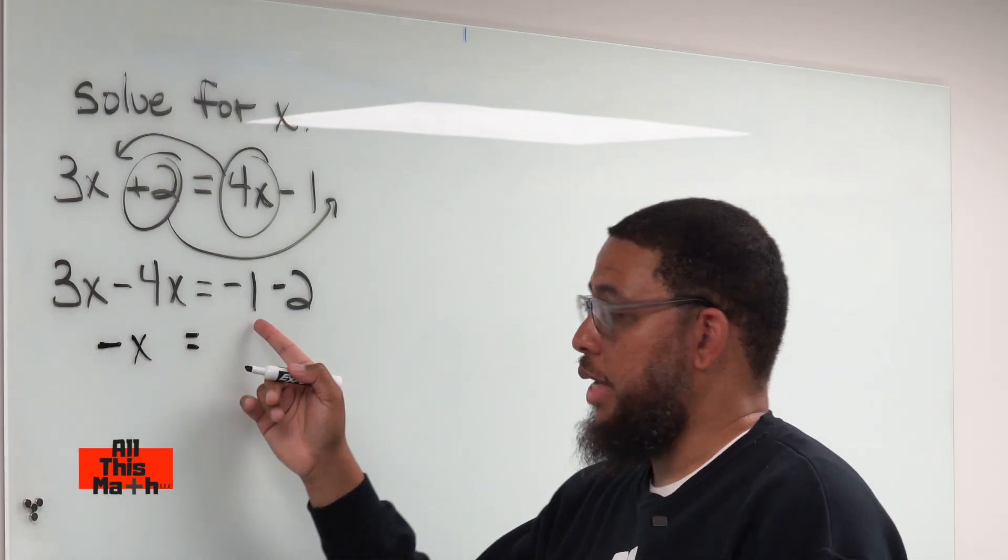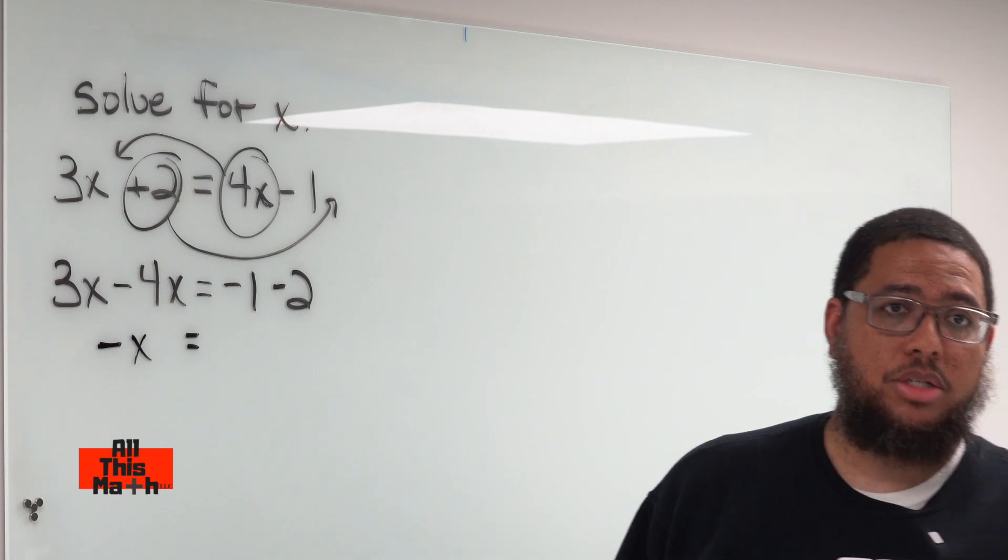So negative x. And on the right side, we got negative 1, take away 2. Negative 1 minus 2 is negative 3.